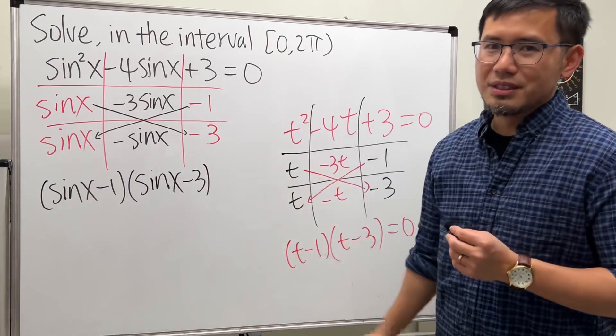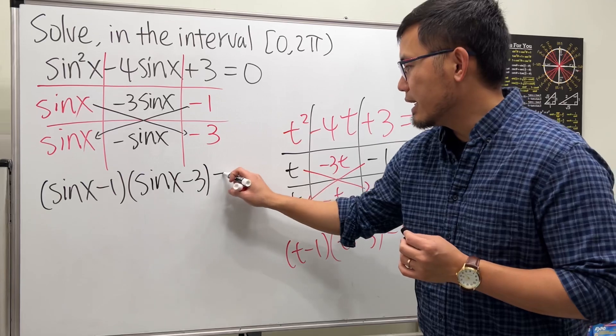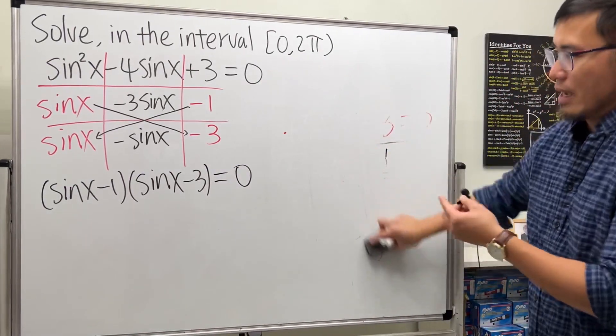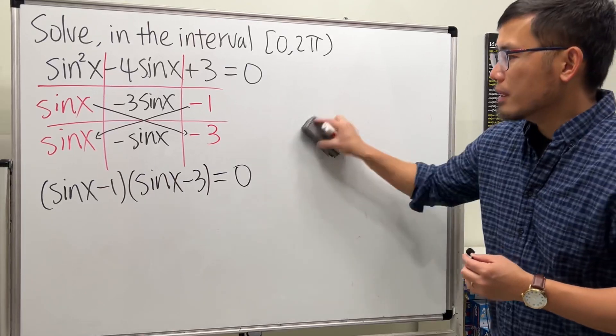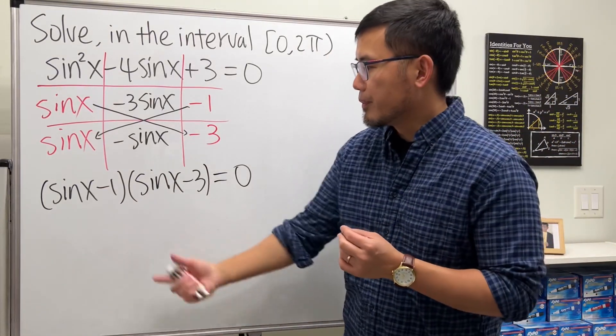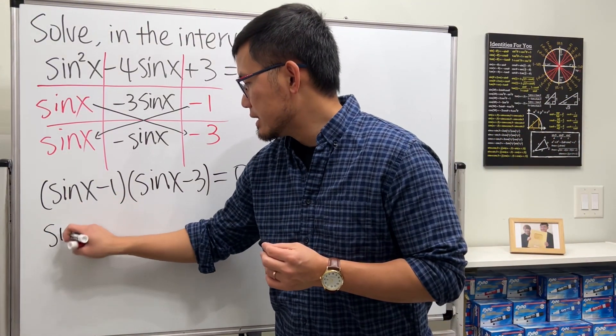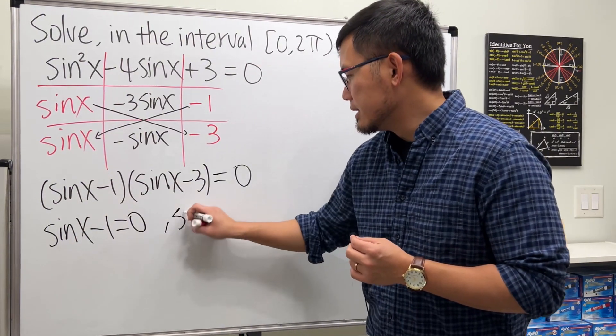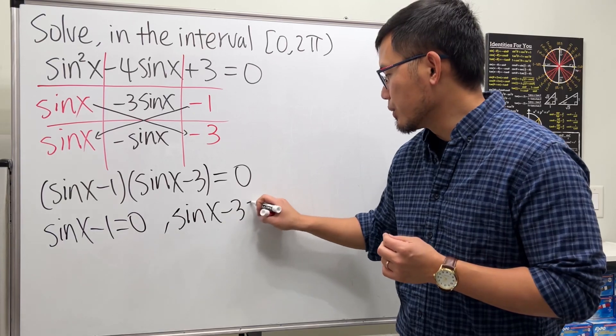So let's go ahead and put down this right here being equal to 0, the same thing that I probably did right here. And to continue right here, you put first sine x minus 1 equal to 0, and the other one sine x minus 3 equal to 0.